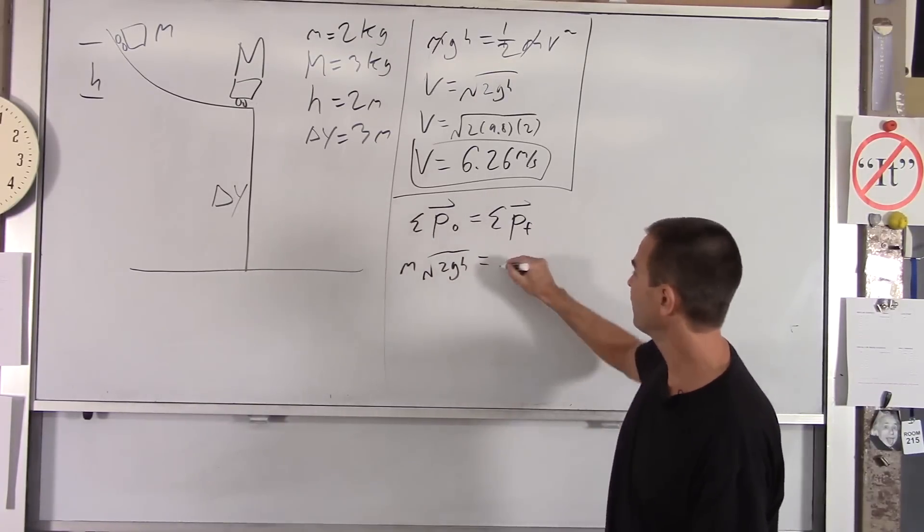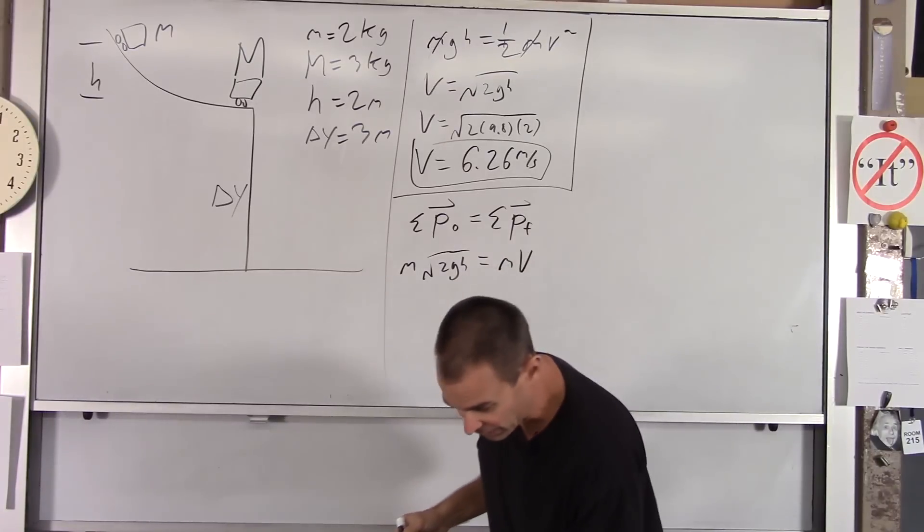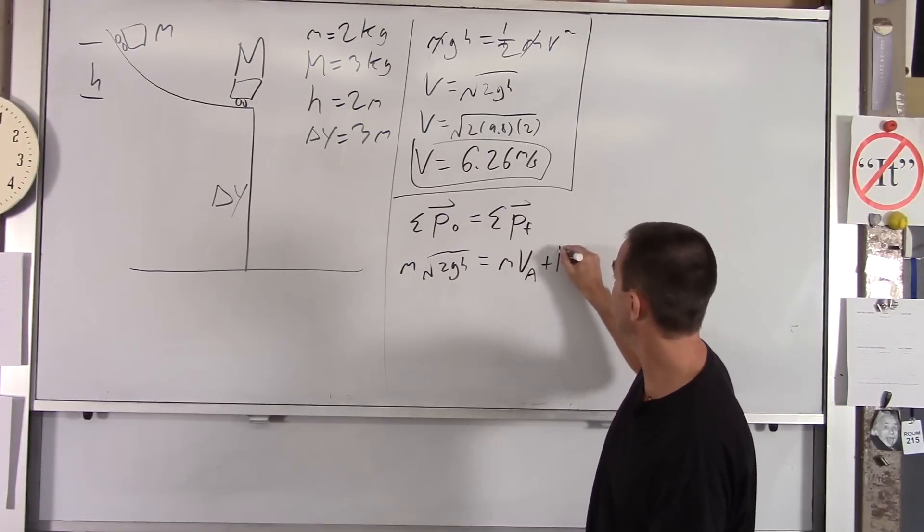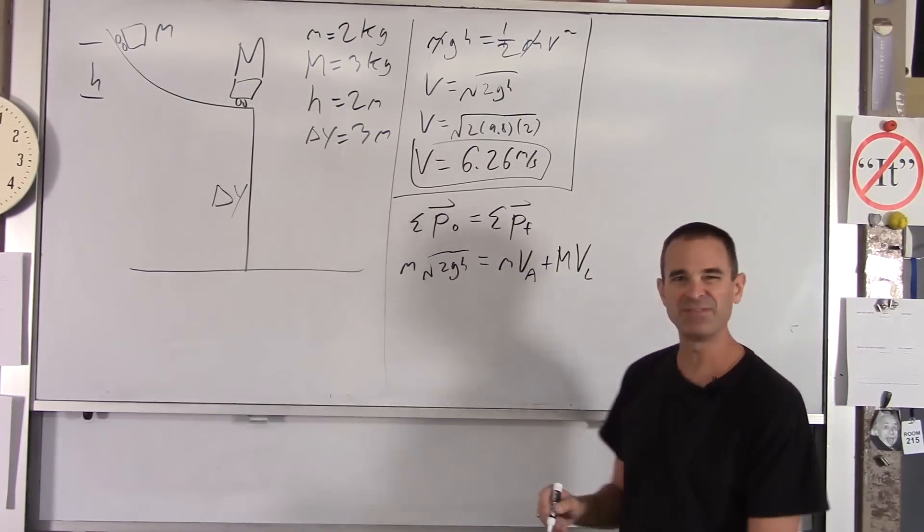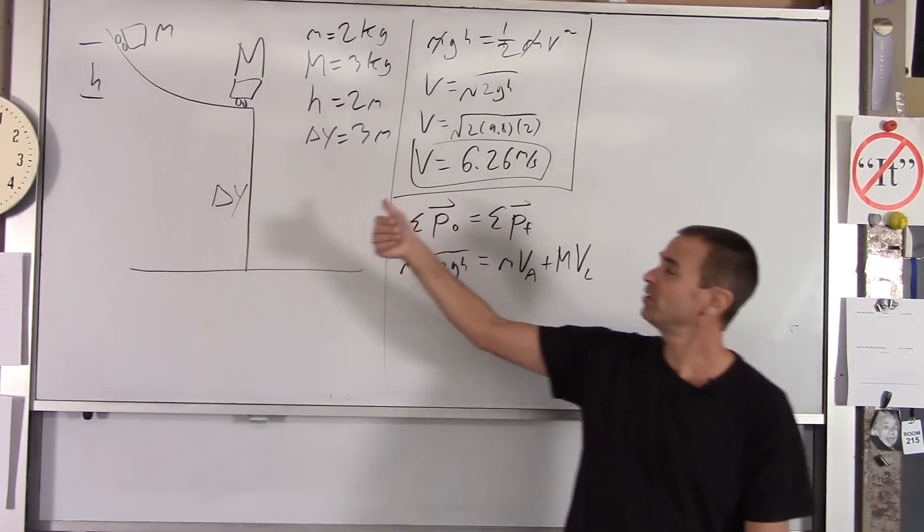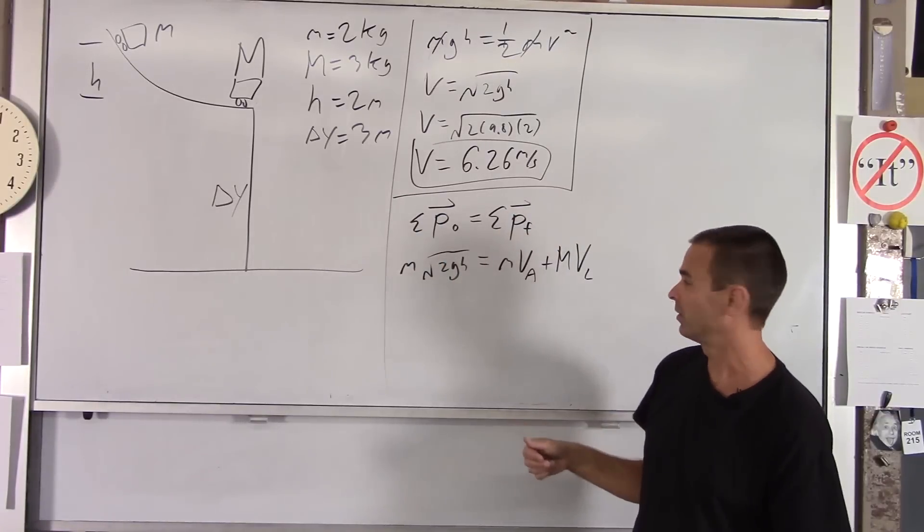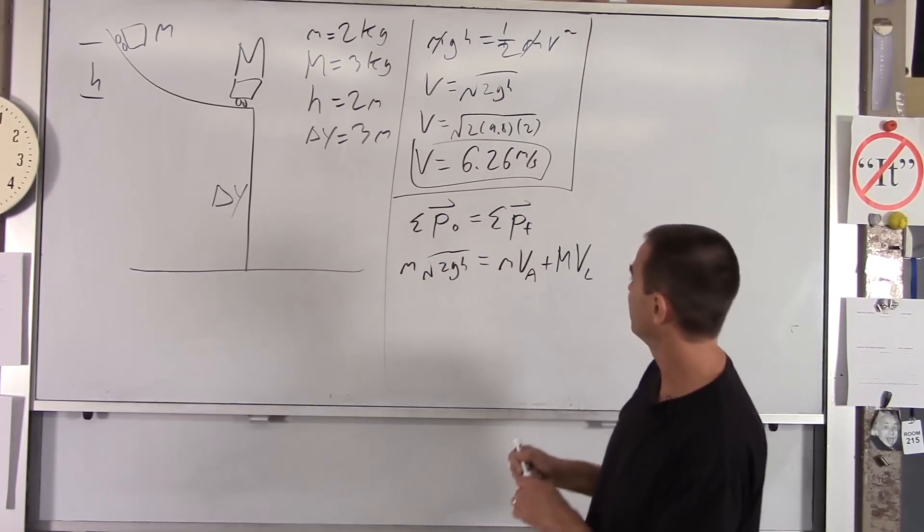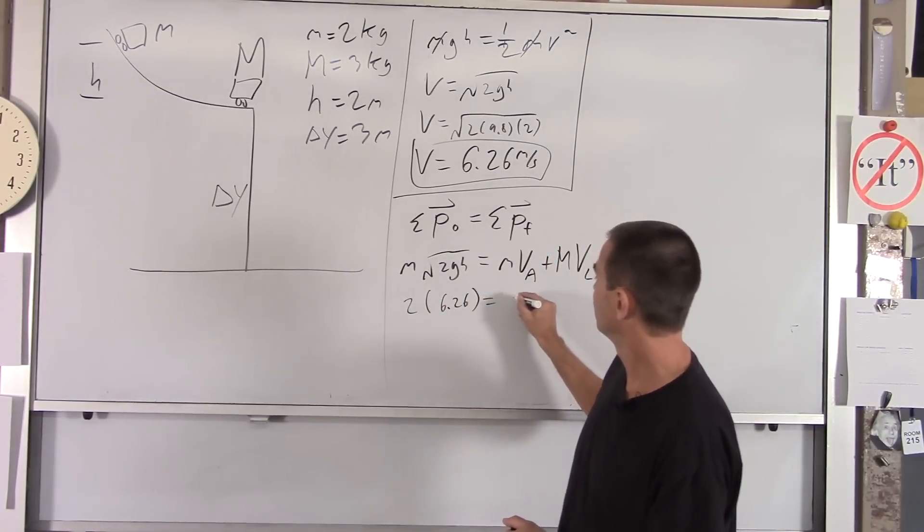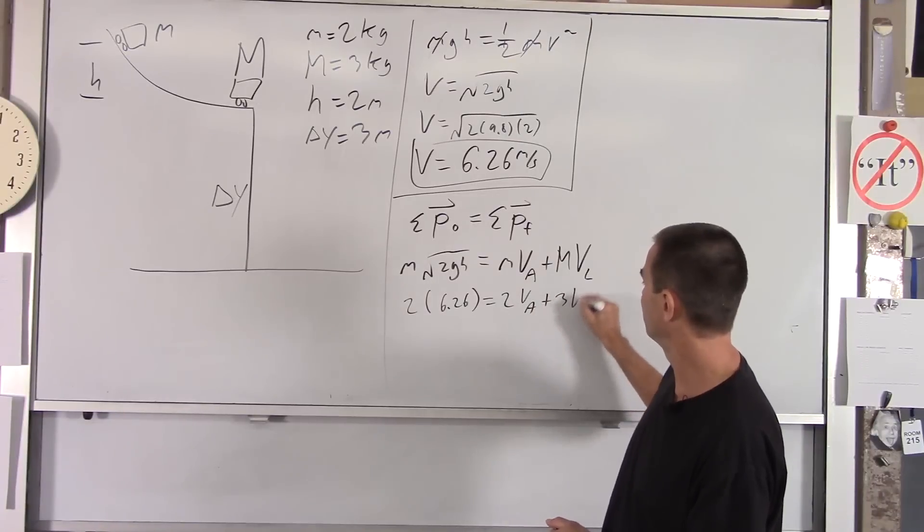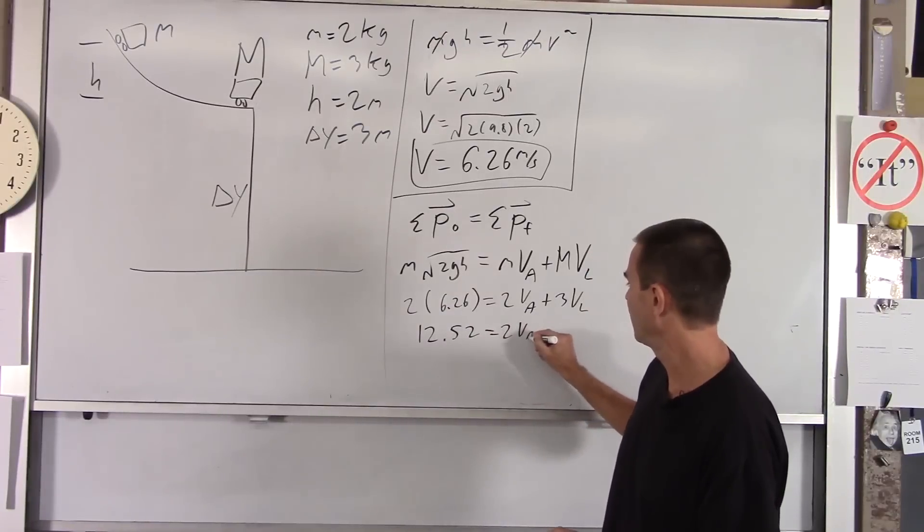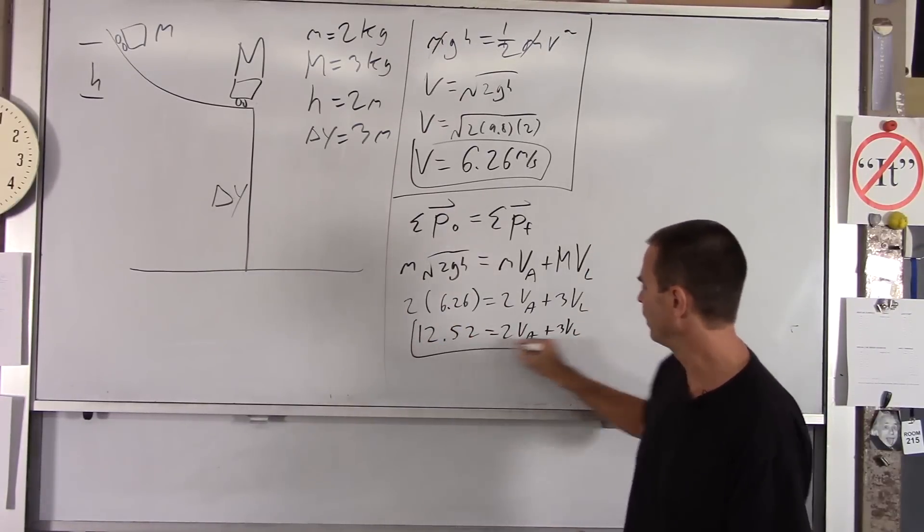Afterward, I've got little m moving with some velocity that I don't know. So I'll call that vA, plus the big m moving with some velocity. And I call that vL. So vA was just little dude after the collision. And vL, that's the big dude. That's his launch velocity. So that's why I called that vL. Now I got numbers for these. We know the mass. Little guy is 2. We know this is 6.26. And this is 2 vA plus 3 vL. And then you get 12.52 equals 2 vA plus 3 vL. So we got an equation there.